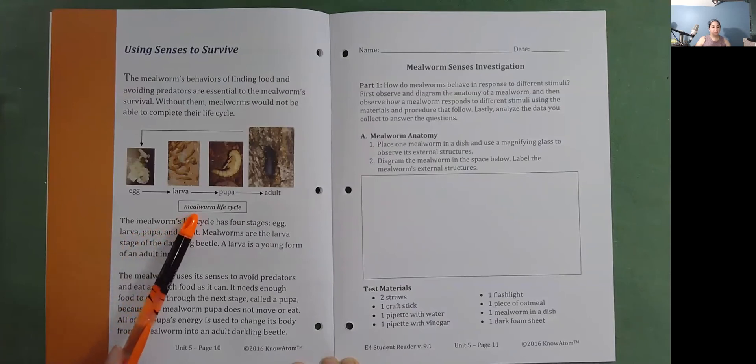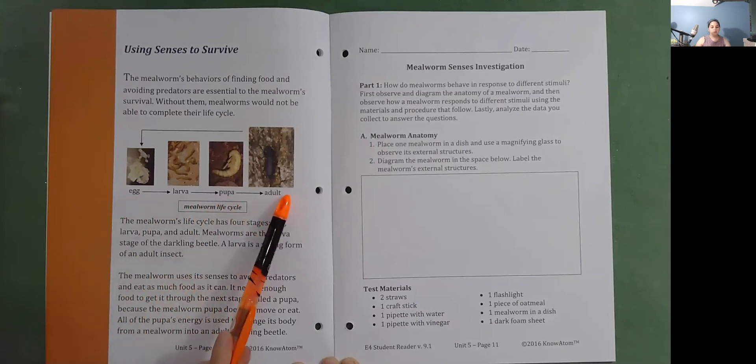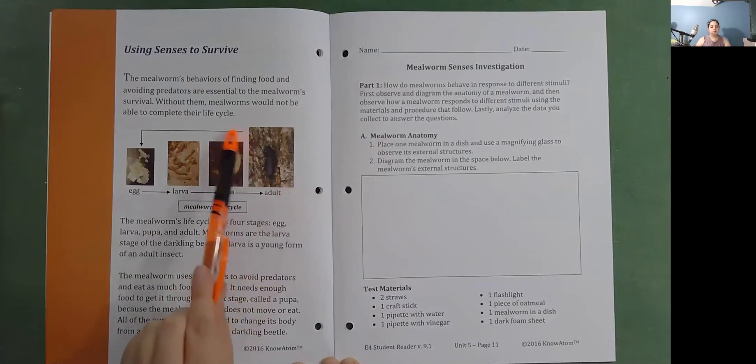All of the pupa's energy is used to change its body from a mealworm into an adult darkling beetle. A mealworm life cycle: egg, larva, pupa, adult, and the adult lays the eggs.